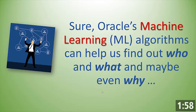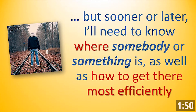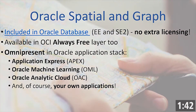Oracle machine learning algorithms can help me figure out who and what and maybe even why a customer or a voter is interested in voting for my candidate. But sooner or later, I'm going to need to know where that customer or that voter is, as well as how to get there most efficiently. And that's where Oracle Spatial and Graph comes in.